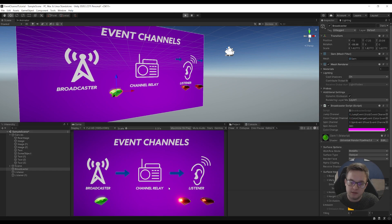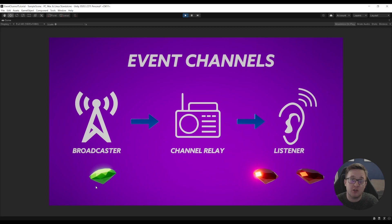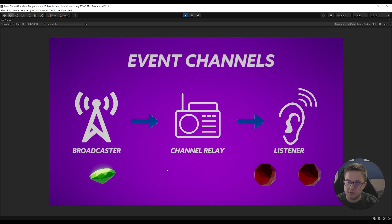If we hit play, we can see this left gem is listening to the jump instruction and this other one isn't. Pressing space, only this gem jumps — and remember, none of these know about the broadcaster. The broadcaster could be anywhere in the scene or in a different scene entirely. Pressing Alt, they both spin around. Pressing Ctrl, they both change color.